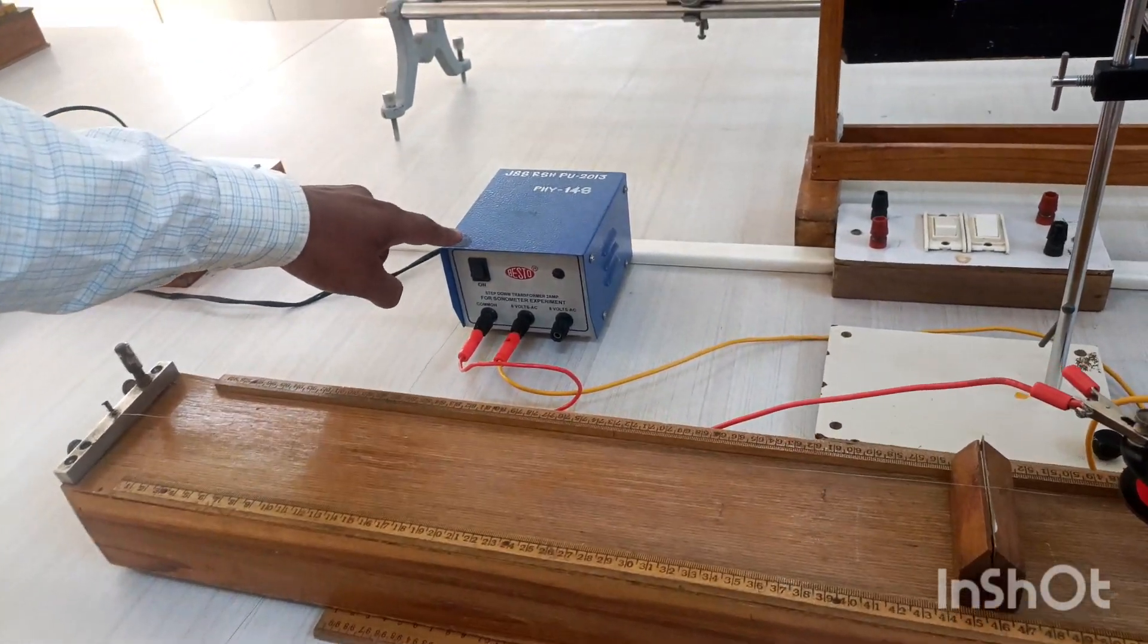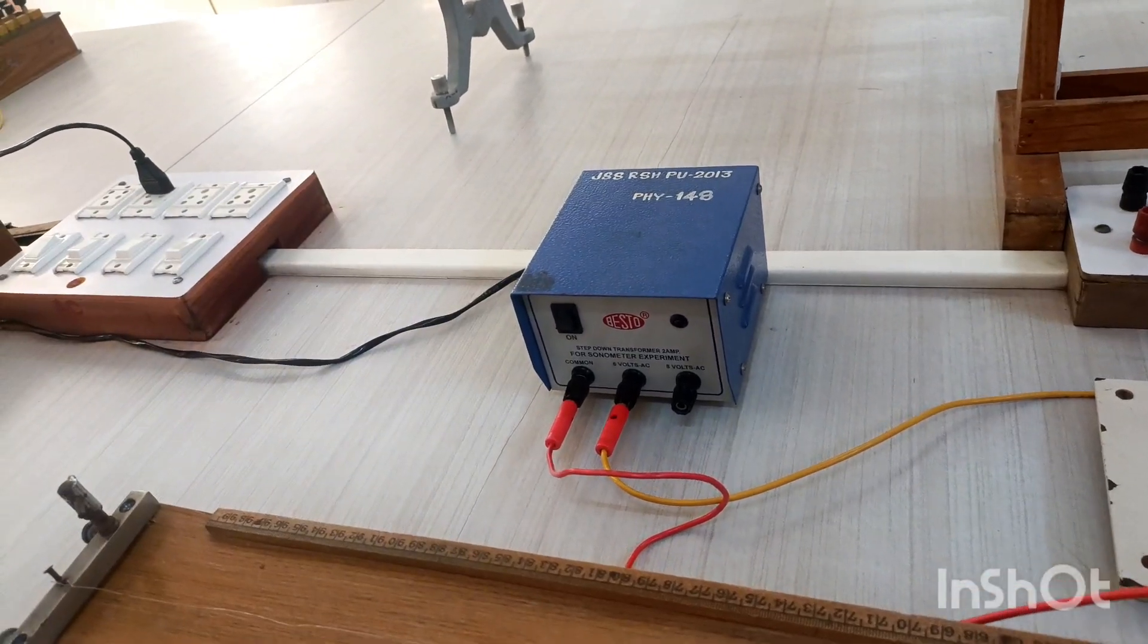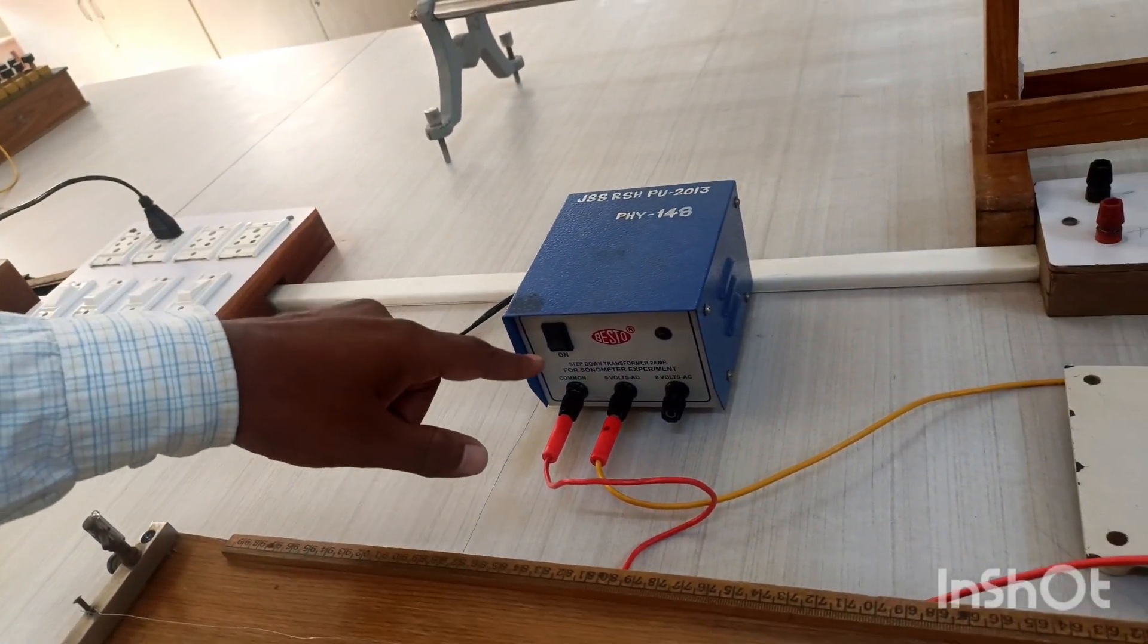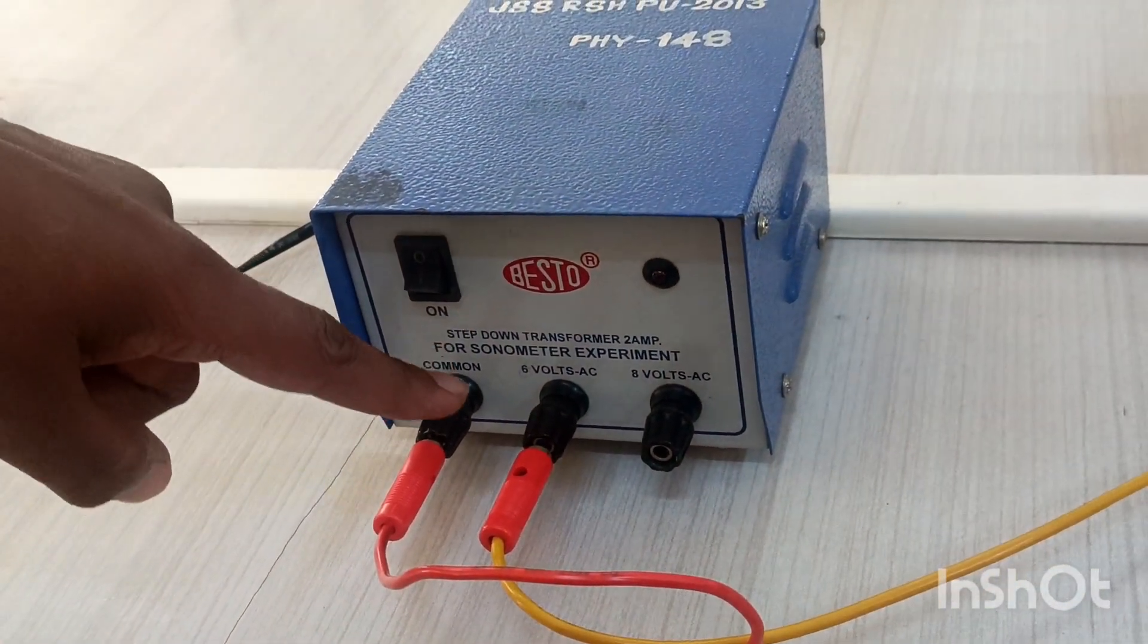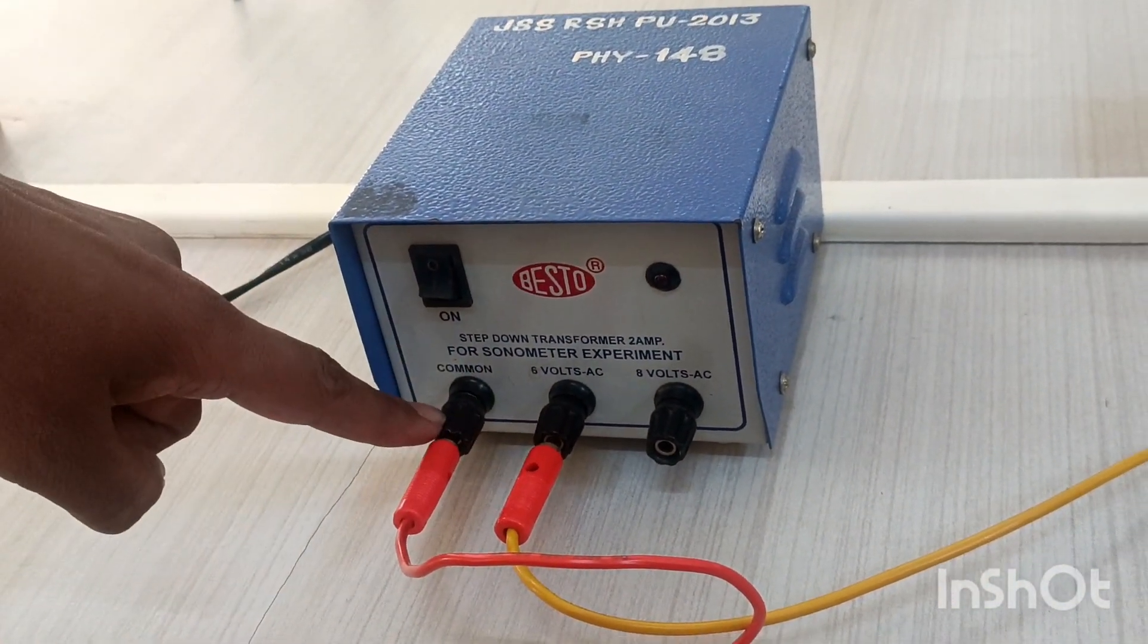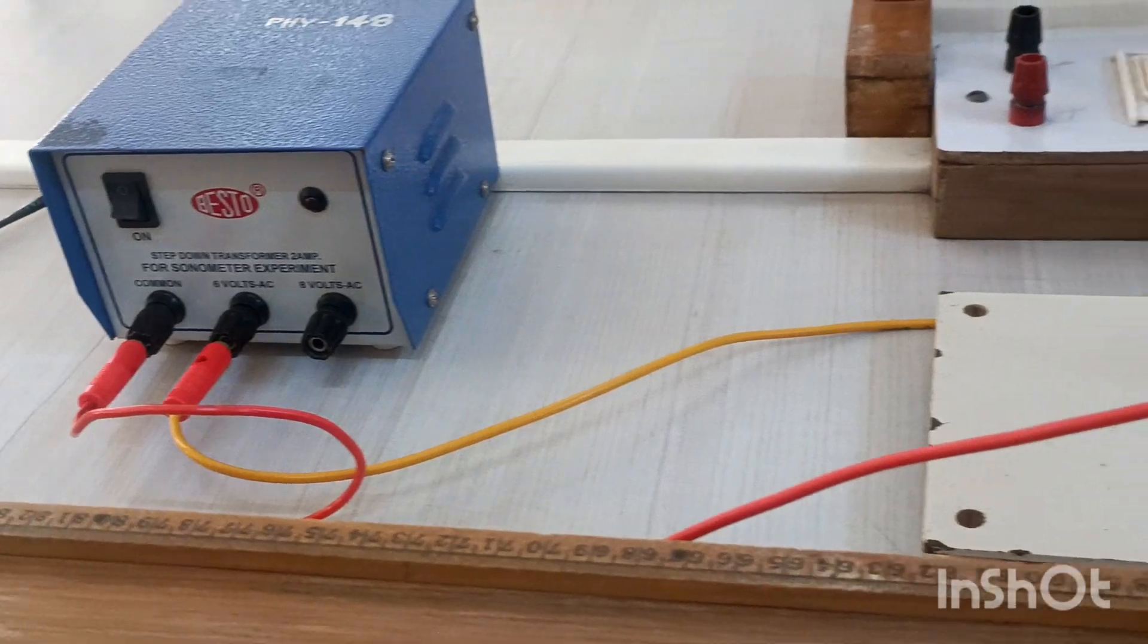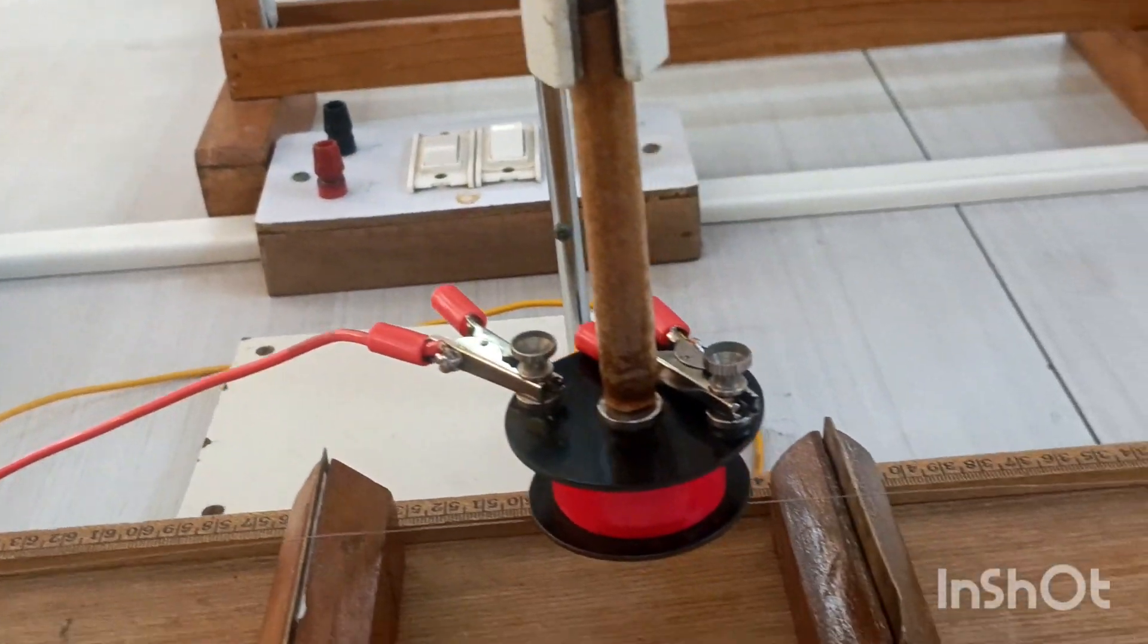We are using a step-down transformer from AC mains with two options: 6 volt and 8 volt. The 6 volt option is selected and connected, with a common terminal applied across the wire.